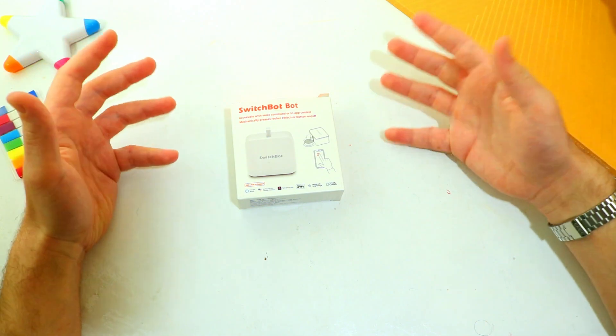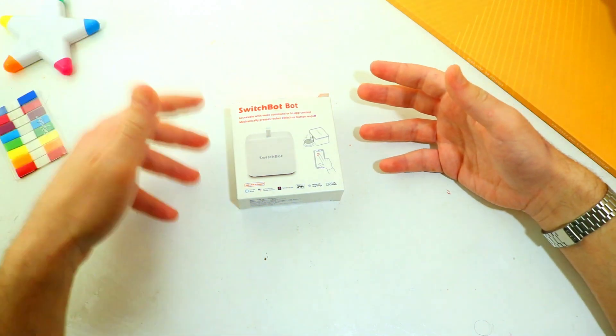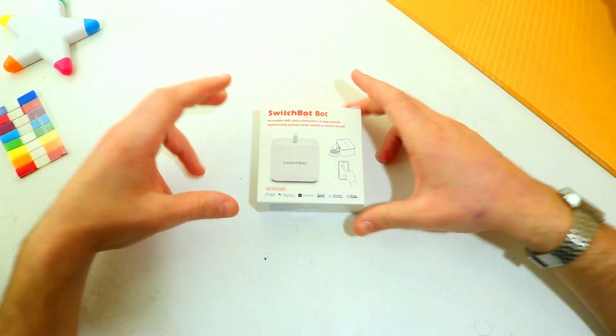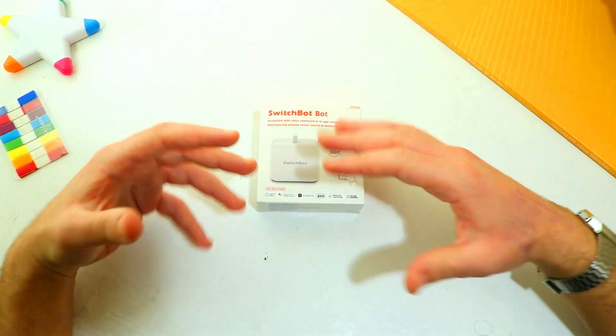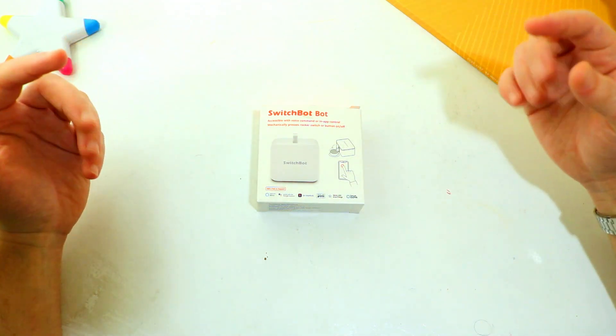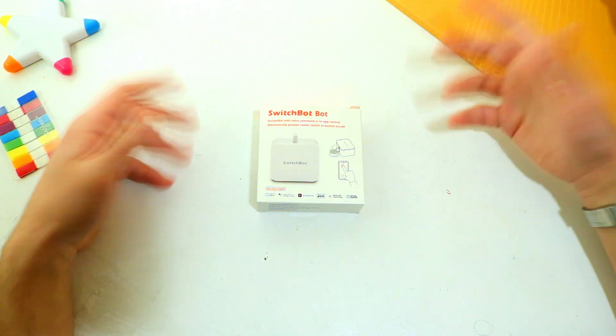Switchbot is a company that essentially just makes products that try to retrofit the current devices that you have to make them smarter. This little gadget here is a robot arm that you can attach to any button or switch on any device or your wall and control it remotely. So let's get into it.